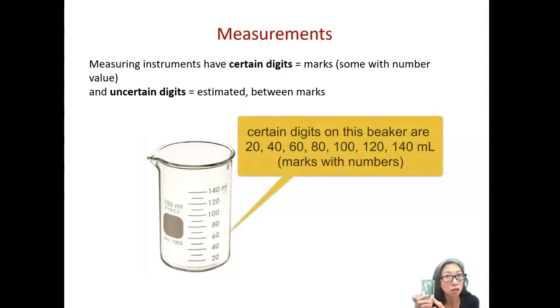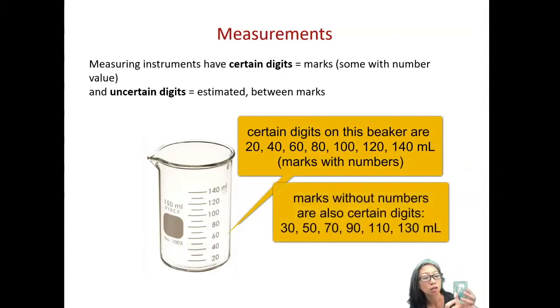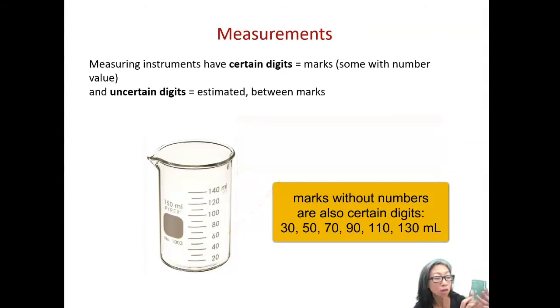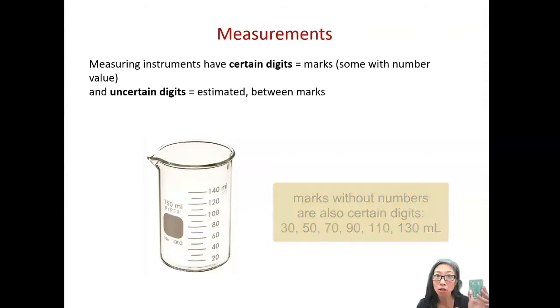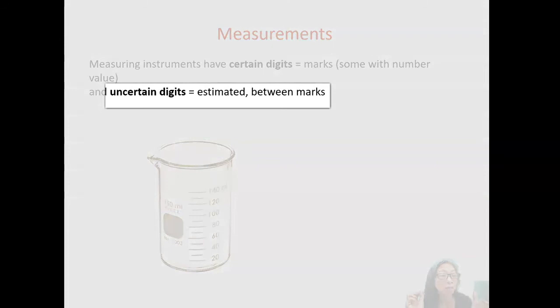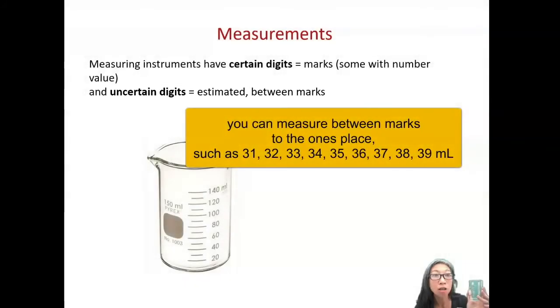The marks are called certain digits, and these are what are known for sure, the marks with the numbers next to them. Like this has 20, 40, 60, and 80 on this beaker. There's also marks without numbers next to them, and those are also known because they are actually marks. So between 20 and 40 there's a mark without a number, but I can guess that that mark between 20 and 40 is 30. Then you also have space between the marks, and those would be uncertain. That is what you estimate between the marks. Between 30 and 40 you could estimate 36, or 37, 38, 39.